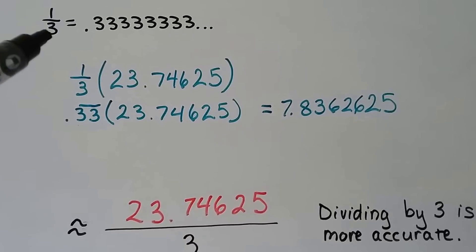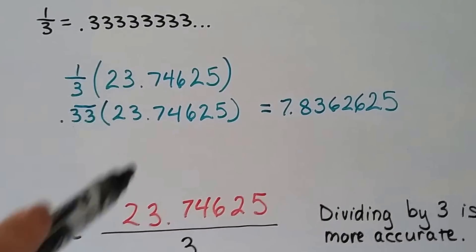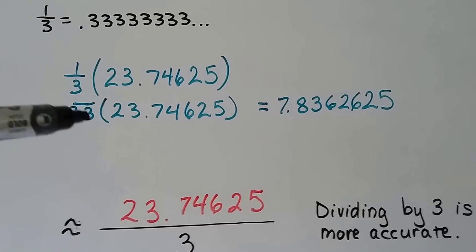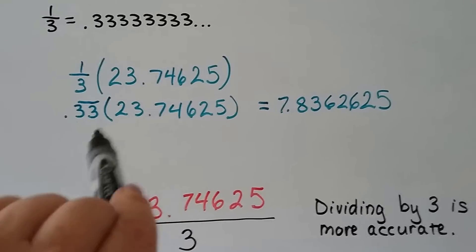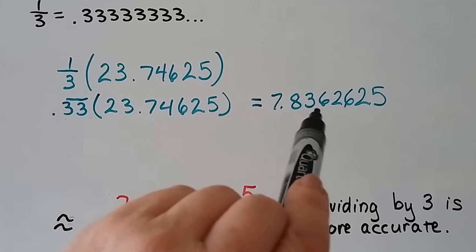And to write as a decimal, 1 third would be .33333, and it continues on. So we would have to just cut it to a .33 to be a third. And if we multiply this on our calculator, we come up with this number, this 7.836 number.